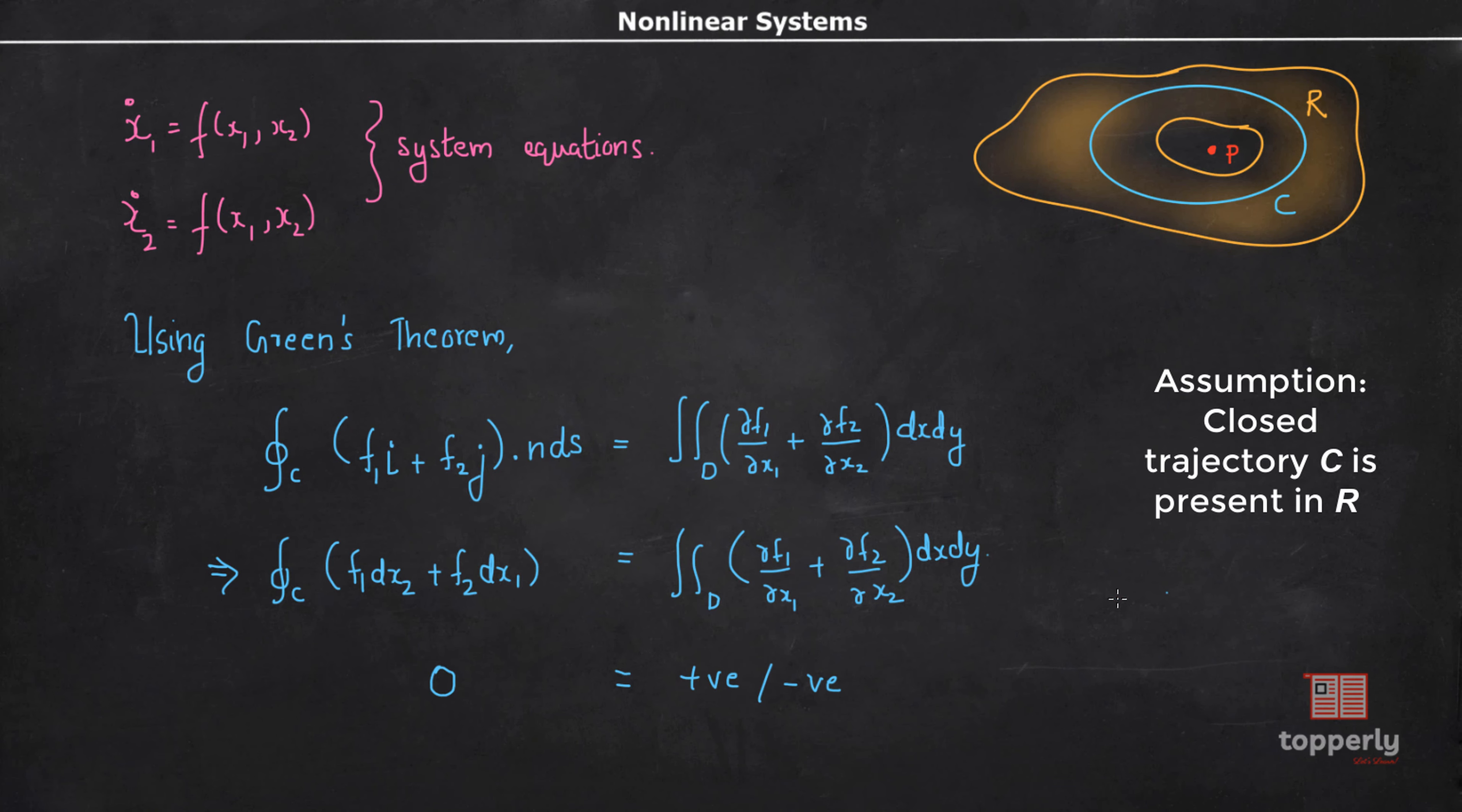Let this equation be f₁ of x₁ x₂ and this be f₂ of x₁ x₂. Therefore, ∂f₁/∂x₁ will be zero and ∂f₂/∂x₂ will be b minus 10x₂². Therefore, ∂f₁/∂x₁ plus ∂f₂/∂x₂ will be b minus 10x₂².